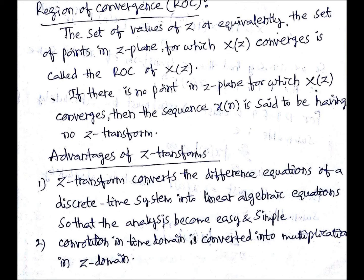Convolution in time domain is converted into multiplication in Z-domain. This advantage is also there with Laplace transform, but that is with time domain signals. Here it is with discrete-time signals.